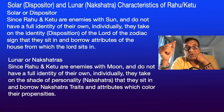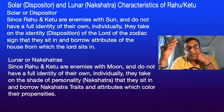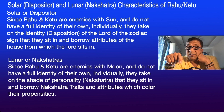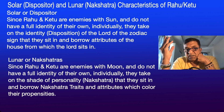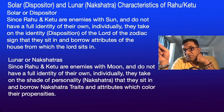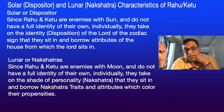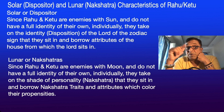Since Rahu and Ketu are enemies with the moon, they take on a shade of personality — the Nakshatra is essentially a coloring of personality, seeing the world through different colored glasses — and borrow the Nakshatra traits which color their propensities. So Rahu and Ketu do two things simultaneously: at the solar level they go with the dispositor planet, and at the lunar level they take the Nakshatra color. If Rahu sits in Cancer, look for where the moon is sitting, which house, and what it's doing there.